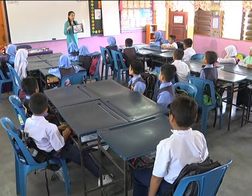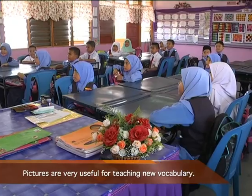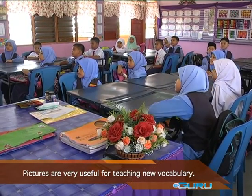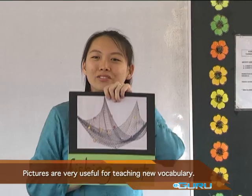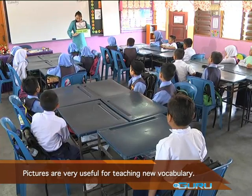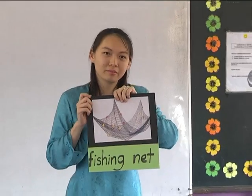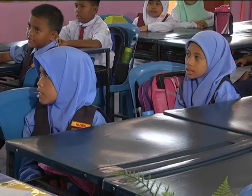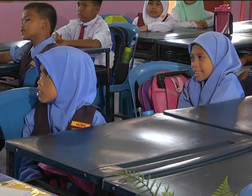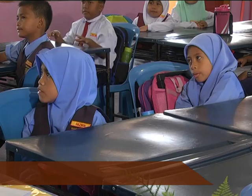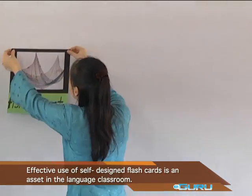I have a picture. What is this? A fishing net. Okay, so let's spell "fishing net." F-I-S-H-I-N-G, N-E-T. Fishing net. Good.